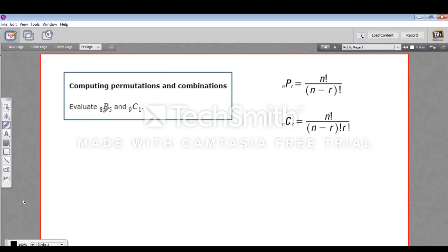So this problem says evaluate 8P5 and 9C1. So what this means is we're asking how many permutations are there when you choose five things out of a group of eight and that the order matters. To do this, you take the total number of eight and you take the factorial of that and put it over the factorial of the total number minus the amount you're choosing.